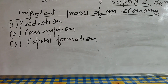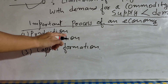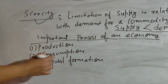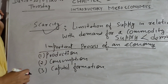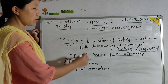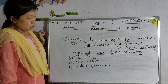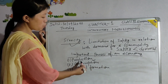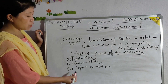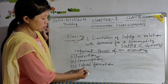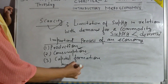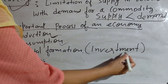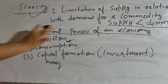Any country should have a good production process in order to obtain economic growth. Production is the process of producing things, and it mainly exists in agriculture, manufacturing, and tertiary sectors. Consumption is the process of consuming — there should be consumption after production. The third process is capital formation. Capital here means money, and capital formation means investment.